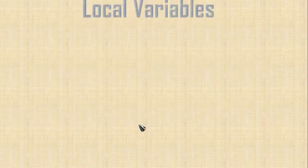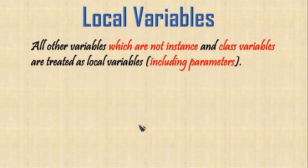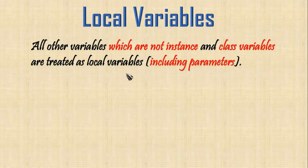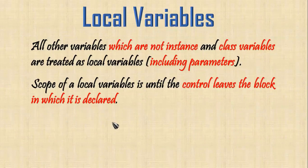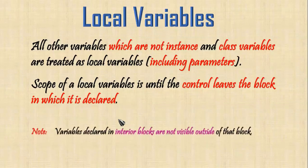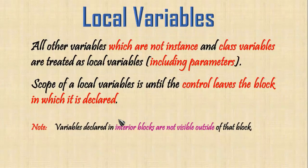Next, local variables. All other variables which are not instance or class variables are treated as local variables, including parameters. The scope of a local variable is until the control leaves the block in which it is declared. If we declare a variable inside a method, it will not be available in other methods.